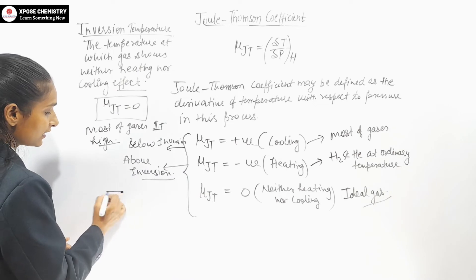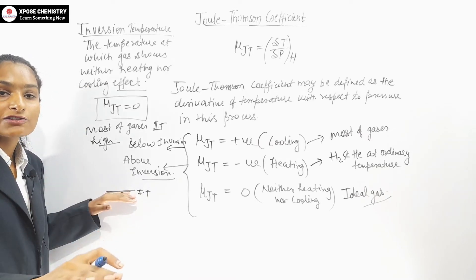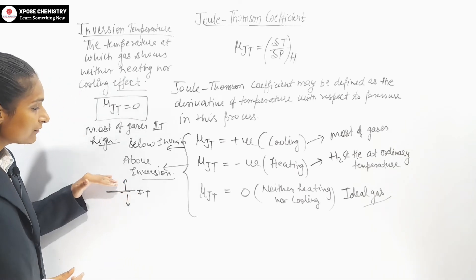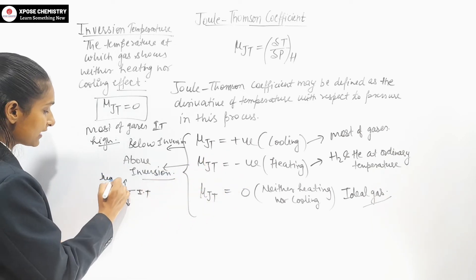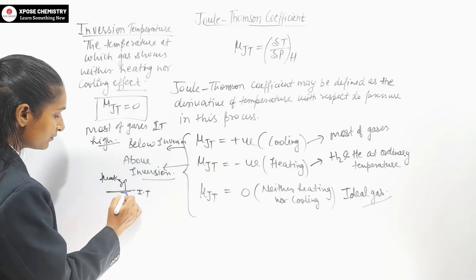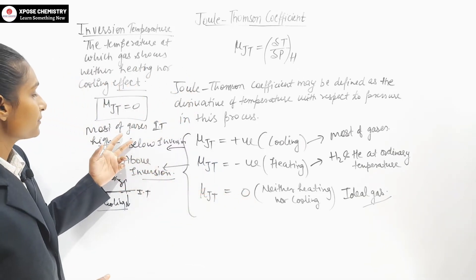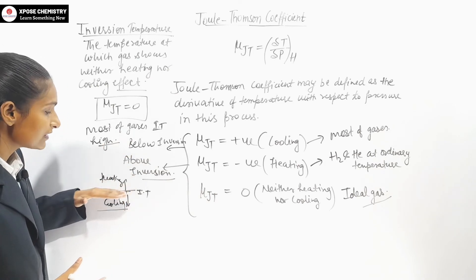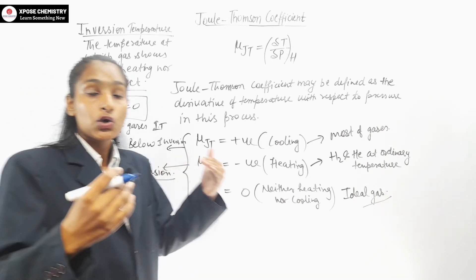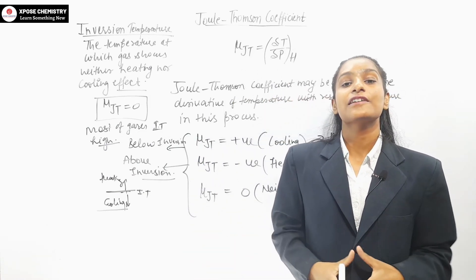We have to fix a point: what is the inversion temperature of our particular gas? This temperature determines whether the gas will show heating or cooling. Most gases have a high inversion temperature, so at room temperature they are below the inversion temperature and show a cooling effect. That is why in the Joule-Thompson experiment, most gases show a cooling effect.